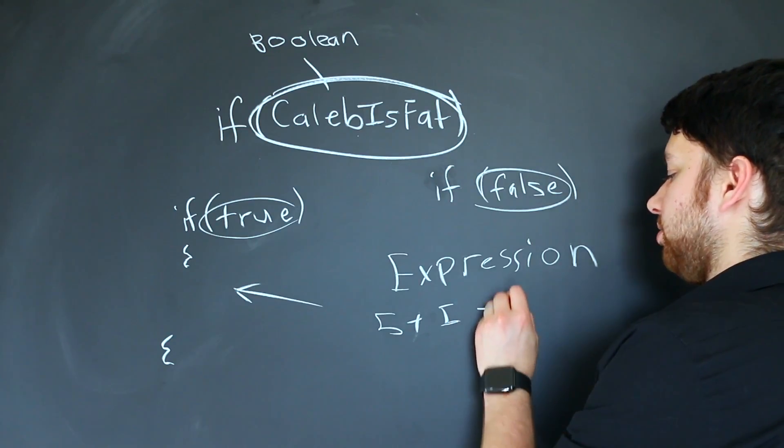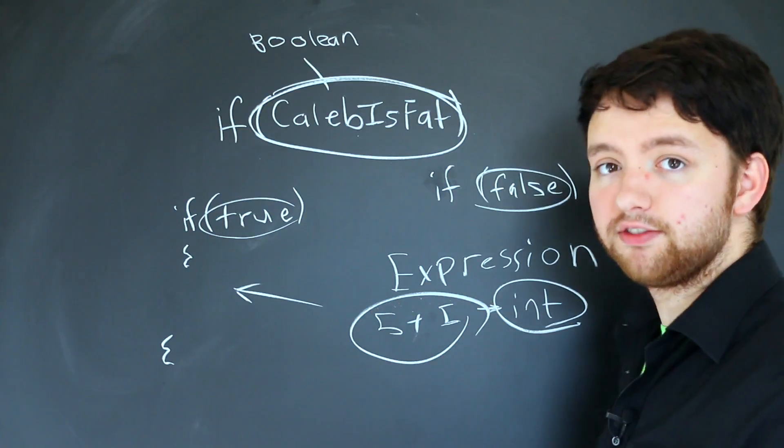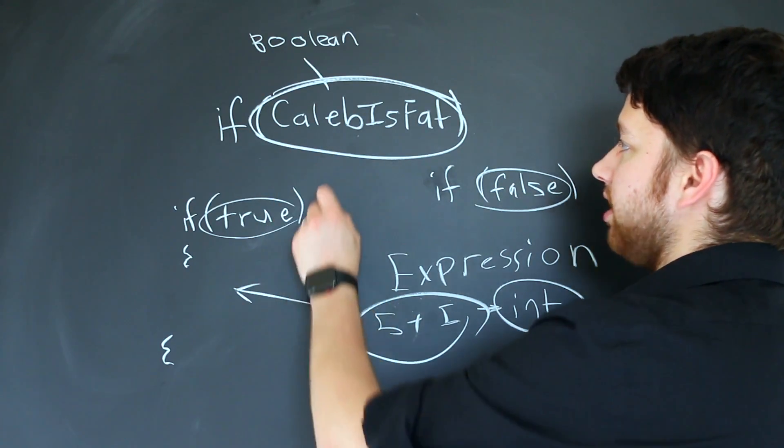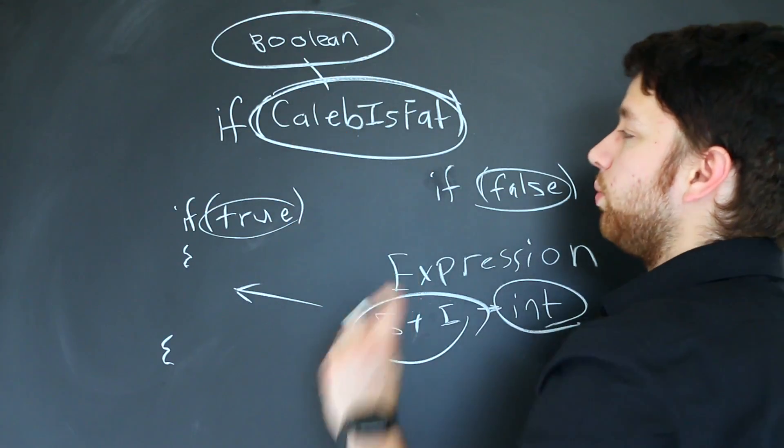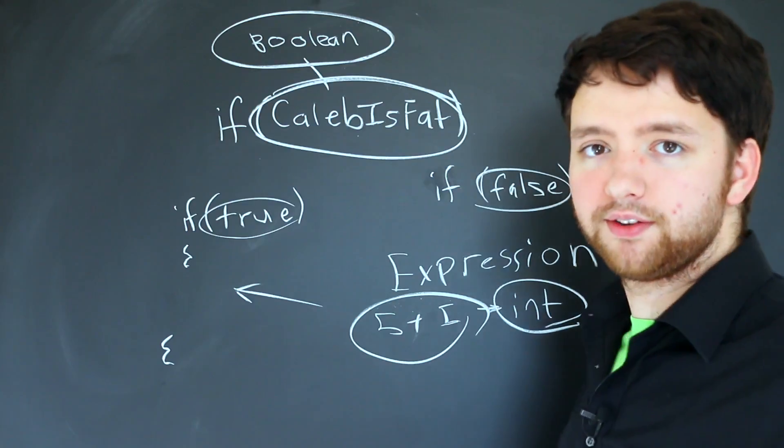Anywhere an integer is expected, this five plus five will work. So the same thing here: because the if statement expects a boolean, we can pass in a boolean variable and it works. That's really cool.